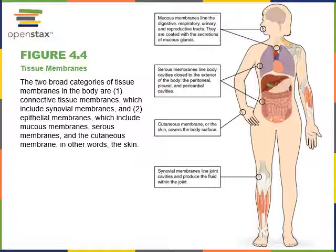As we study the integumentary system, we'll see the types of connective tissue in the dermis: a papillary layer of areolar connective tissue and a reticular layer of dense irregular connective tissue beneath the epidermis. The epidermis also contains keratin, a protein produced as an intermediate filament inside epithelial cells. As cells mature and move toward the surface, they produce large amounts of keratin, eventually die, and the remaining keratin provides strength to resist abrasion.